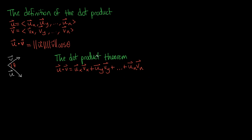This summation equals the dot product — this multiplication of magnitudes. The law of cosines is the key to connecting the definition of the dot product to the dot product theorem.